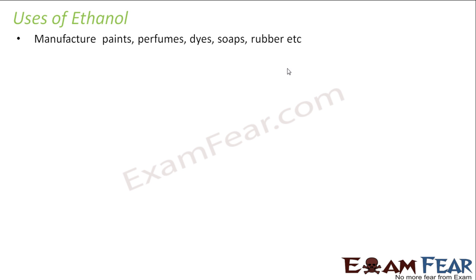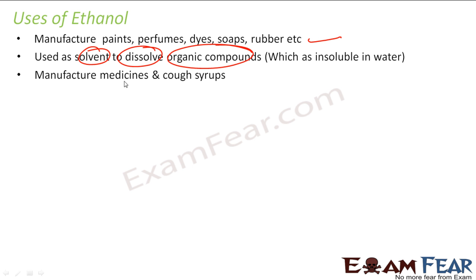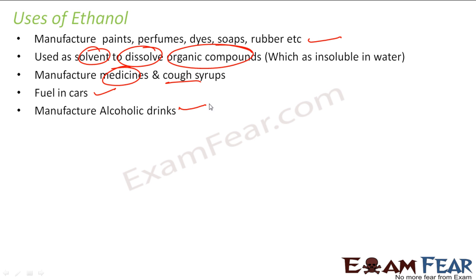Ethanol is used to manufacture paints, perfumes, dyes, rubbers, etc. It is also used to dissolve organic compounds, so it is used as a solvent — since most organic compounds are insoluble in water, ethanol dissolves them. It is used to manufacture medicines and cough syrups — most cough syrups contain ethanol. It is also used as fuel in cars, to manufacture alcoholic drinks, and as an antiseptic.